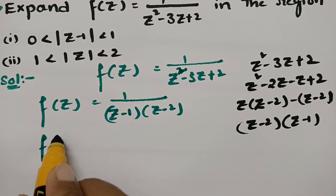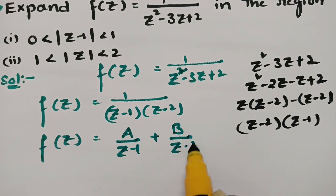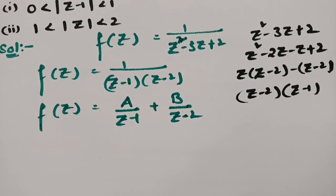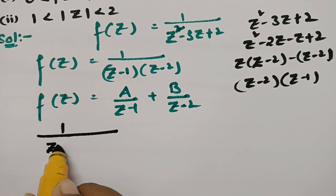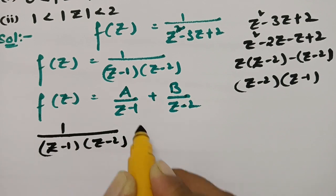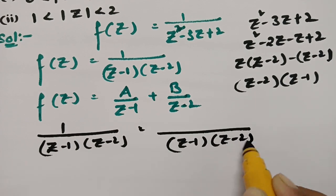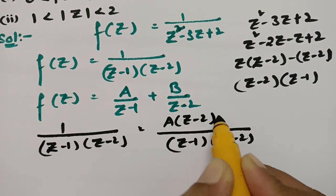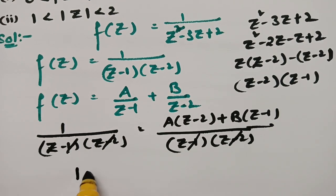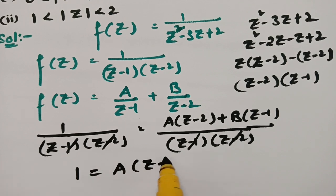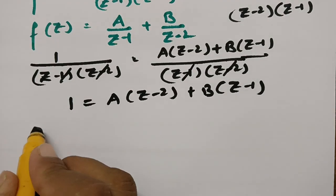Now I am going to resolve into partial fractions. This can be split as A/(z - 1) + B/(z - 2). Taking LCM, 1/[(z-1)(z-2)] = [A(z-2) + B(z-1)] / [(z-1)(z-2)]. Cancelling the denominator, we get 1 = A(z - 2) + B(z - 1). Now we find the values of A and B.